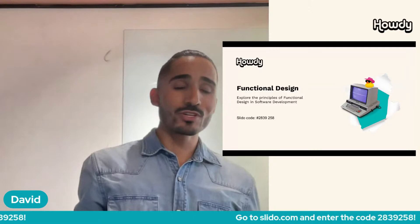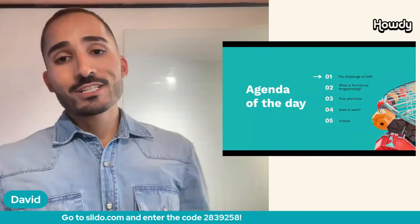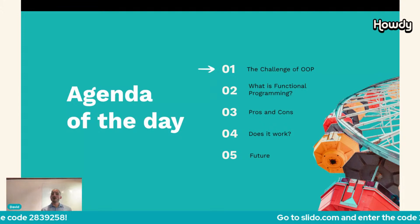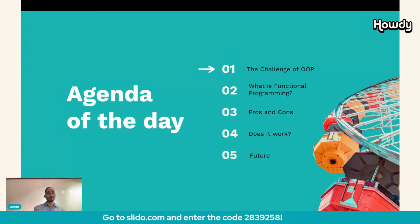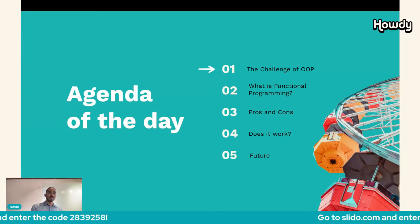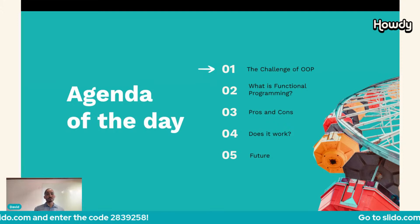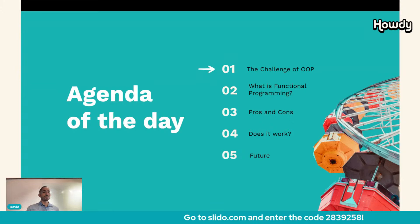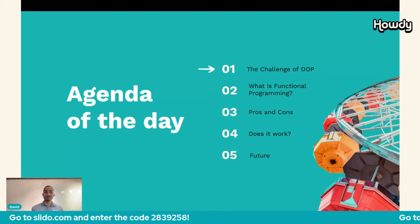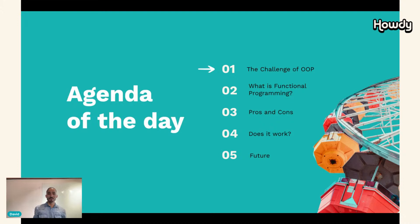This is the agenda for today. First, we are going to talk about the challenges of object-oriented programming. Then we will define what functional programming is and talk about its principles — we will demystify functional programming and explain it in a simple, easy-to-understand way. Third, we'll cover pros and cons. Then we'll answer whether functional programming works. And finally, we will discuss the future of functional programming.